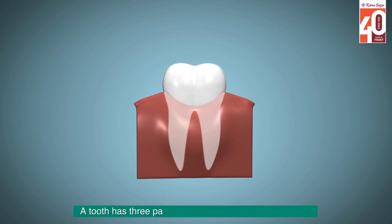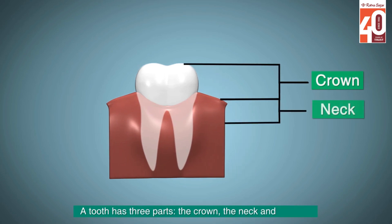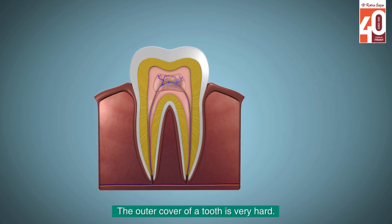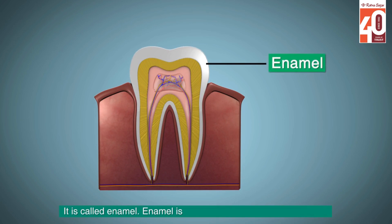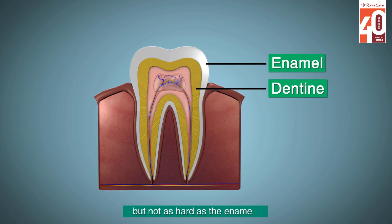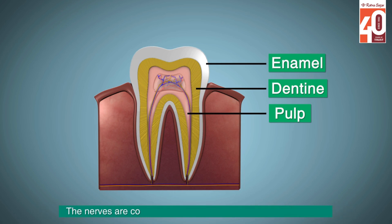A tooth has three parts: the crown, the neck, and the root. The outer cover of a tooth is very hard — it is called enamel. Enamel is the hardest substance in our body. Below it lies the dentine, which is also quite hard, but not as hard as the enamel. Inside the dentine is the pulp. It is soft and has blood vessels and nerves. The nerves are connected to the gum through a hole in the root.